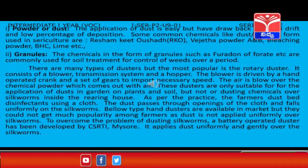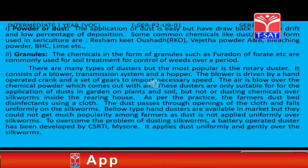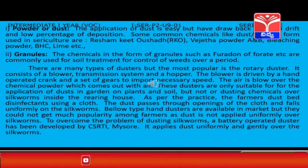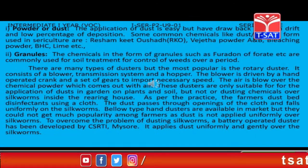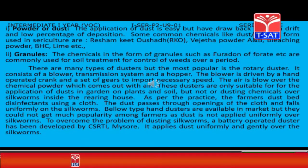Some common liquid chemicals used in agriculture and sericulture are: formalin for disinfection of rearing houses; fungicide for fungus control; Rogar, DDVP, Dynocop etc. for control of insects and diseases of the mulberry; Glycyl, a herbicide; Vipul, Harita as growth regulators; and Sampoor, Vipul etc. for uniform plant growth.